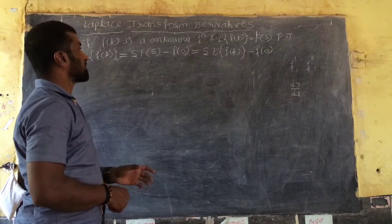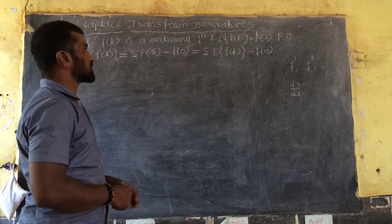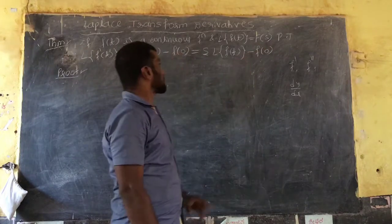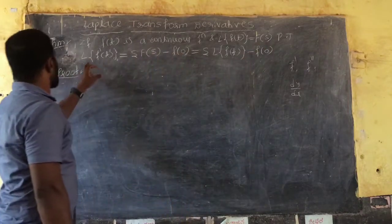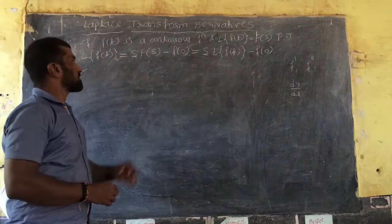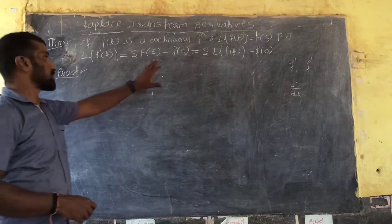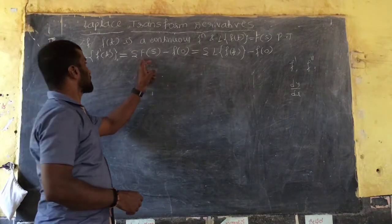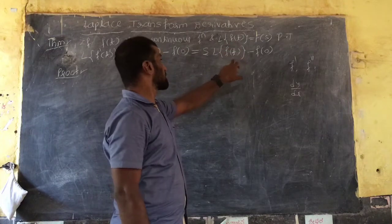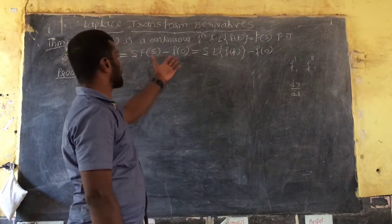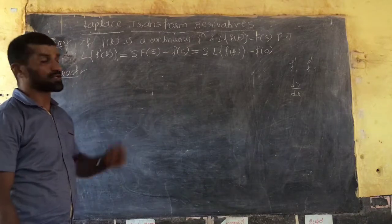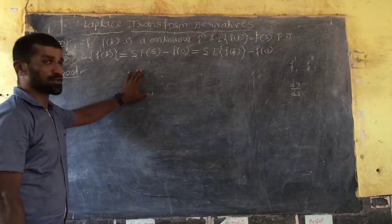The Laplace transform of a derivative: if f is a continuous function and L{f(t)} = F(s), then L{f'(t)} = s·F(s) - f(0). Here F(s) is the symbol of the Laplace transform, so L{f'(t)} = s·L{f(t)} - f(0). Now let's go to examples and prove the theorem.